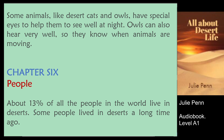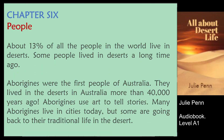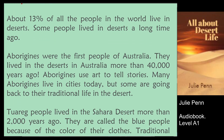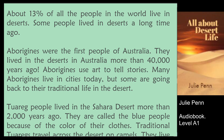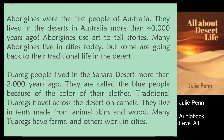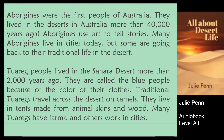Chapter 6: People. About 13% of all the people in the world live in deserts. Some people lived in deserts a long time ago. Aborigines were the first people of Australia. They lived in the deserts in Australia more than 40,000 years ago. Aborigines use art to tell stories. Many aborigines live in cities today, but some are going back to their traditional life in the desert.